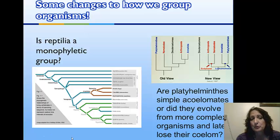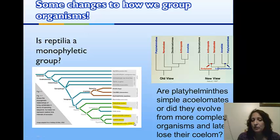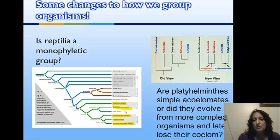This has led to changes in how we group organisms. Looking at reptiles — turtles, crocodiles, lizards, and snakes — given our understanding of clades, we ask: can we call Reptilia a clade? Birds are actually more closely related to crocodiles; they share a common ancestor more recently than the crocodile shares one with the lizard. Turtles' common ancestor goes way back to all the other groups. So the traditional grouping of reptiles is not a valid monophyletic clade.